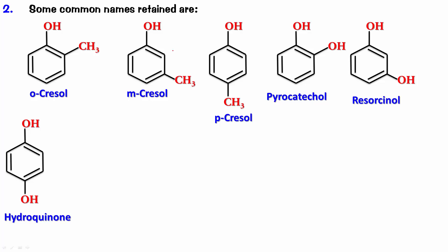So this is the way we name phenols. Any substituent attached to the OH group, assuming it carries a priority less than OH, means the parent is phenol. Give proper numbering to assign the lowest number to the first locant, and that way you'll be able to name phenols and their derivatives. I hope this video helps you understand the nomenclature of phenols. Thanks for watching.